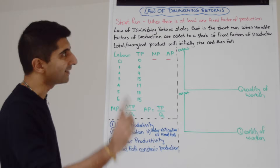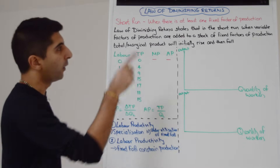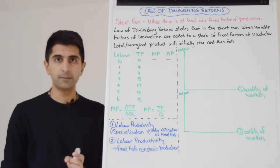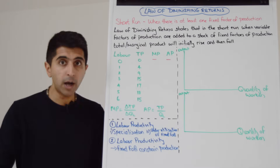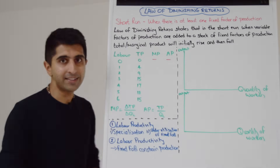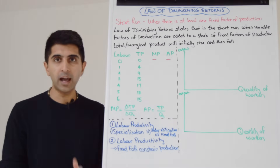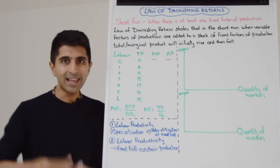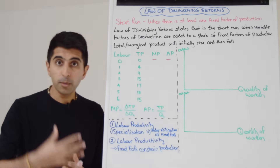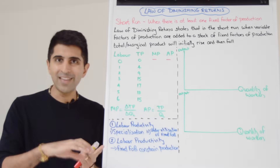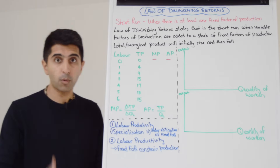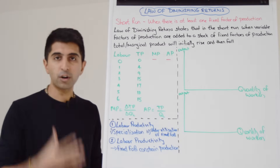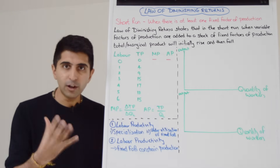The law of diminishing returns states that in the short run, when variable factors of production, i.e. labor, are added to a stock of fixed factors of production — our land and capital — total or marginal product will initially rise and then fall. That's a very interesting phenomenon for a business to know if they're in the short run. What we want to do is illustrate the relationship between employing more workers, the quantity of workers, and the output we get as a return — the returns to labor. We want to map that on diagrams using curves: marginal product, average product, and total product, to help explain the law of diminishing returns.